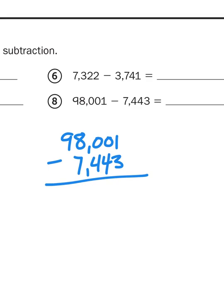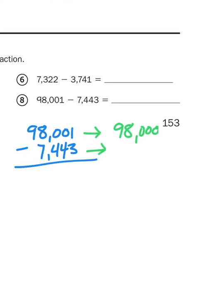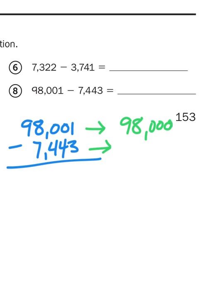And then 7,443 rounded to the nearest thousand. Well, I got to ask myself, is that closer to 7,000 or 8,000? Well, if the halfway point is 7,500, then I would round down to 7,000.